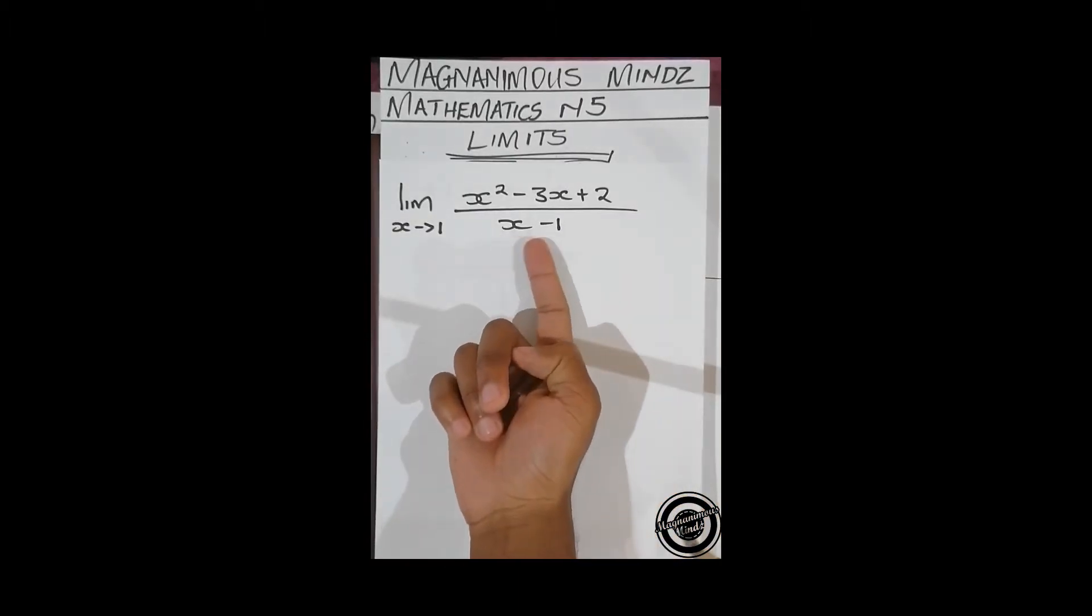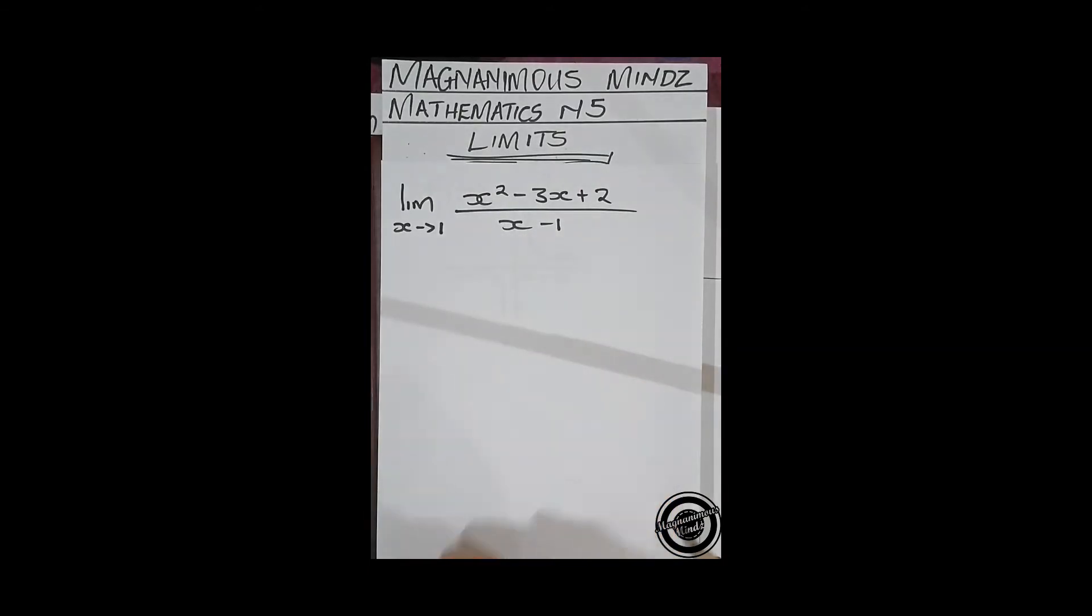If this is our function, you'll realize that if we substitute this 1 into this function we are going to get an undefined function because x minus 1 is going to give us zero, and you can't divide anything by zero. So for us to find out what's actually happening at that point, we use limits and also use other basic principles of mathematics like factorizing, simplifying, and so on.